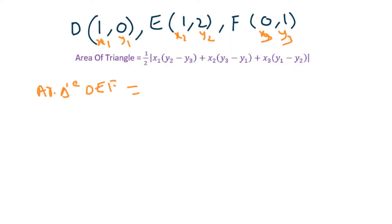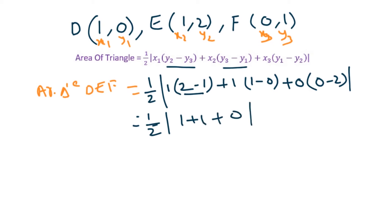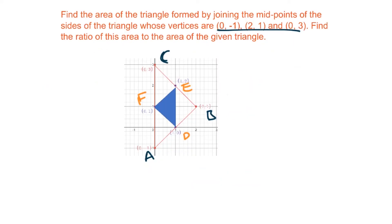Area of triangle DEF = (1/2) |x1(y2 - y3) + x2(y3 - y1) + x3(y1 - y2)|. Substituting: x1=1, (y2-y3)=2-1=1; x2=1, (y3-y1)=1-0=1; x3=0, (y1-y2)=0-2. This gives (1/2)|1×1 + 1×1 + 0| = (1/2)(2) = 1 square unit — the area of the small blue triangle.